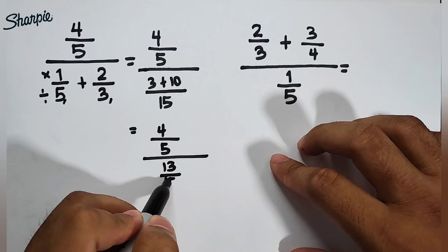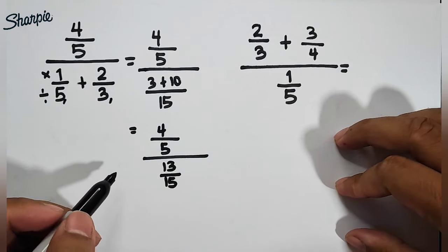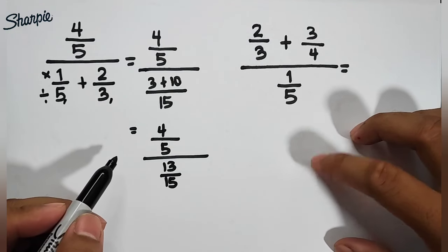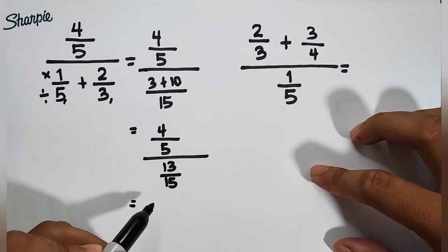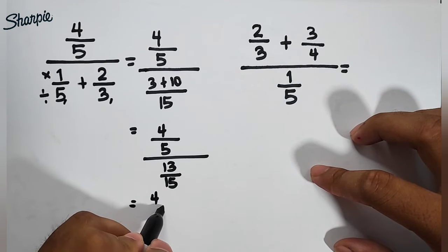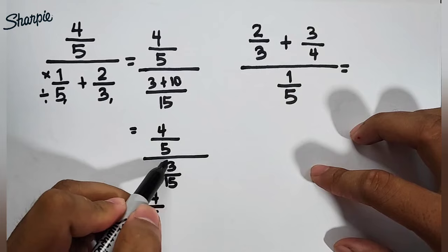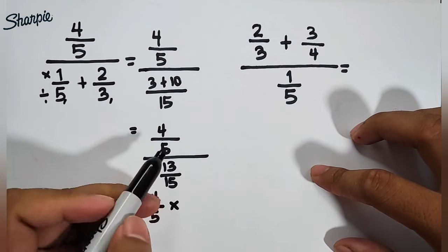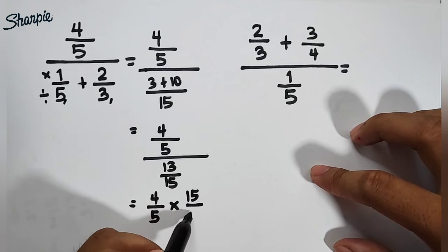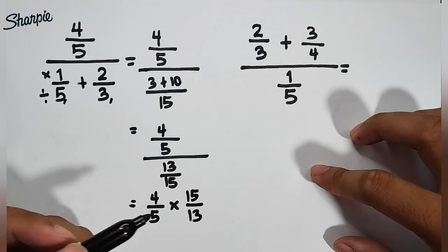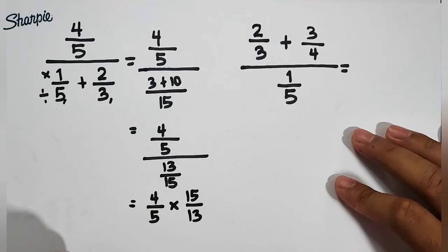So what's next after this is that we will get this 4 over 5, copy them, copy the fraction, 4 over 5, and then multiply by the reciprocal of 13 over 15, which is 15 over 13.